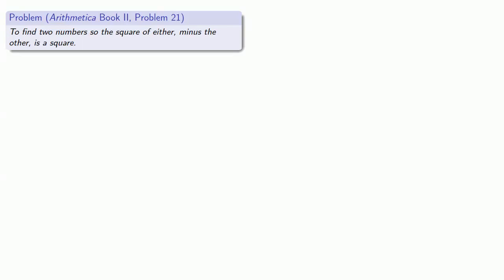So let's think about this. We want to find two numbers where one of them squared minus the other is a square. These are really two conditions - this relationship has to hold for both of them.